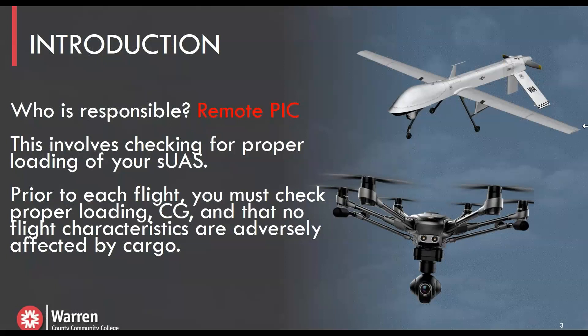What are you responsible for? This includes checking for the proper loading of your small unmanned aircraft system. Prior to each flight, you must check proper loading — is it loaded correctly? The center of gravity, that's what CG stands for. And you must ensure that no flight characteristics are adversely affected by cargo. If you're flying a drone like the Yuneec Typhoon, it's perfectly designed by the company with the camera for the center of gravity. If you start to tie things on or put a third-party aftermarket device on it, you're going to affect that loading and proper center of gravity. Even the Predator drone is designed to be aerodynamic with a proper center of gravity, and when the military weaponized these drones, they had to ensure the center of gravity remained intact.